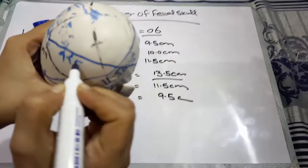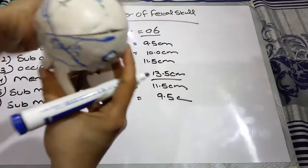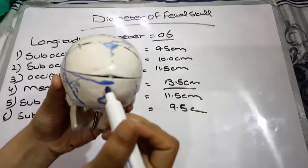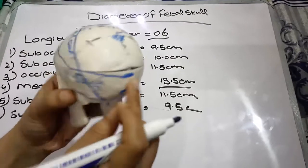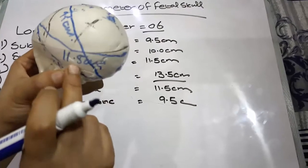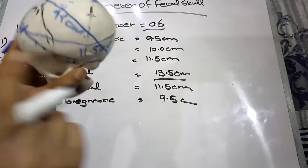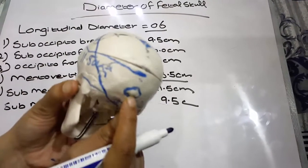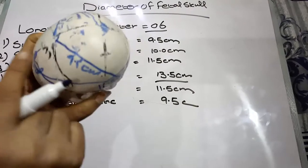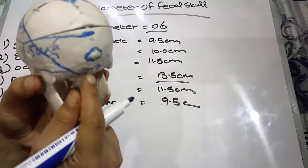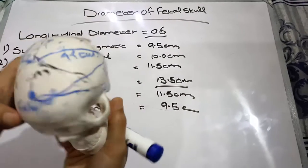From the sub-occipital to the bregma, to the anterior fontanel, this is called the sub-occipital bregmatic diameter — also the smallest posterior diameter — and this is 9.5 centimeters. These are our six longitudinal diameters.